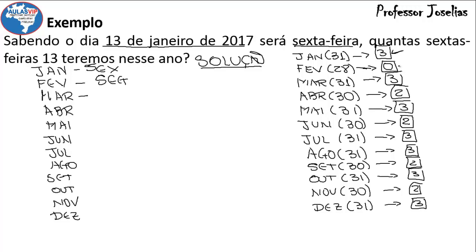Maio: abril tem 30 dias, resto 2 — quinta avança para sexta, sábado — maio cai no sábado. Junho: maio tem 31 dias, resto 3 — sábado avança para domingo, segunda, terça — junho cai na terça. Julho: junho tem 30 dias, resto 2 — terça avança para quarta, quinta — julho cai na quinta. Agosto: julho tem 31 dias, avança 3 dias — sexta, sábado, domingo — agosto cai no domingo.